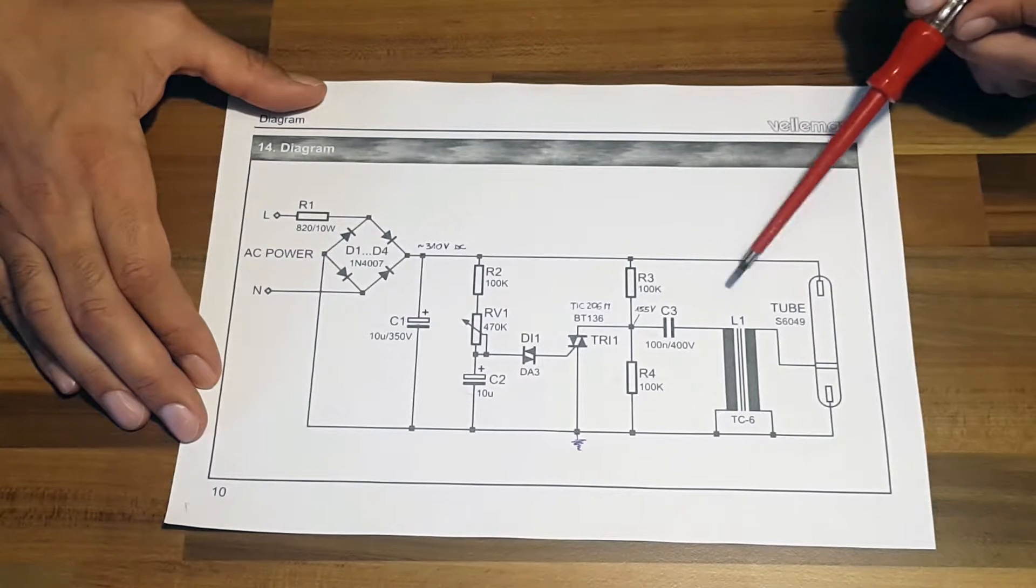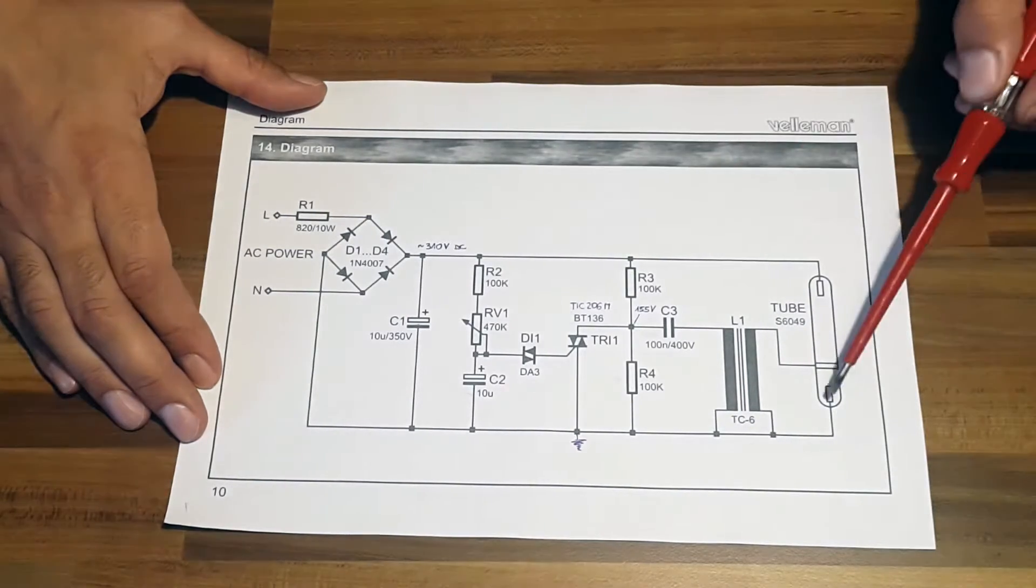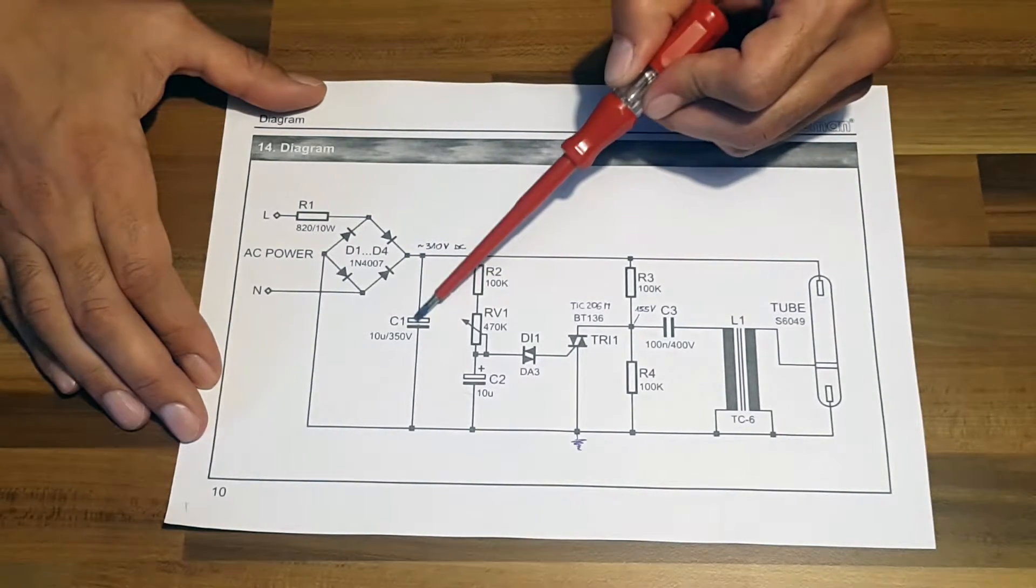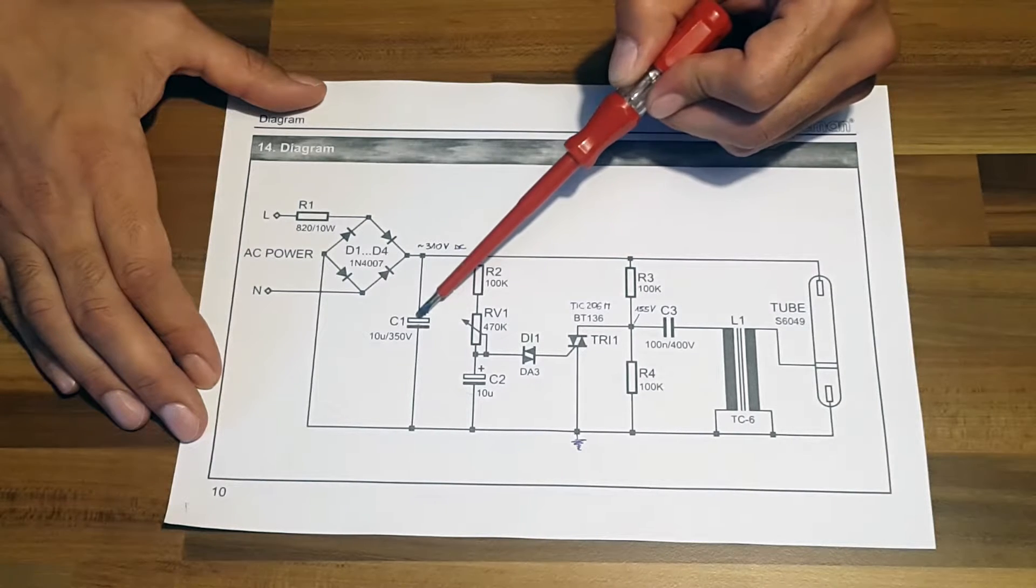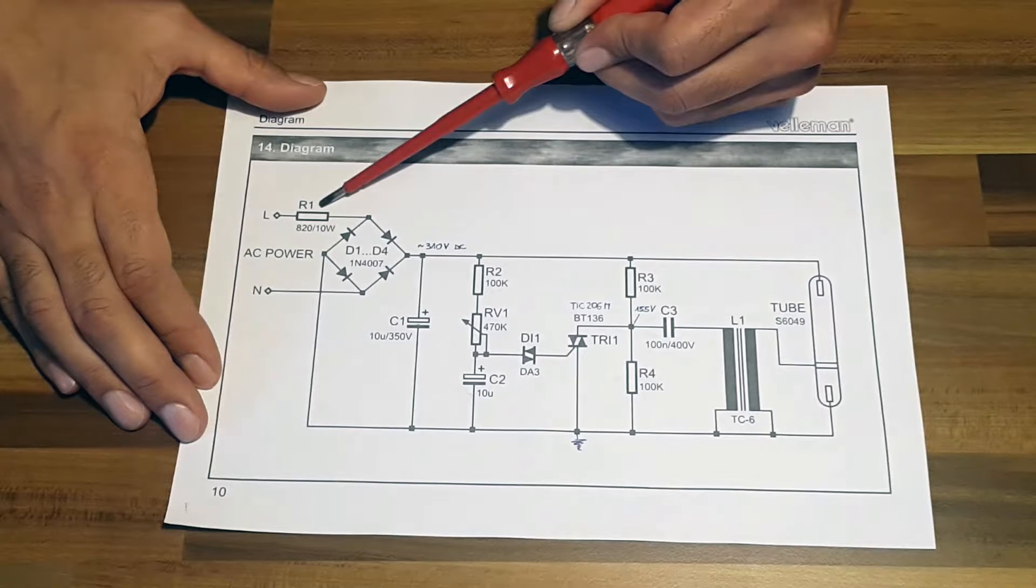Once the ionization of the xenon is done, the tube lights as long as there is sufficient voltage and current across the tube. It stops because the voltage on C1 drops. It does because the R1 limits its charging. This is how it strokes.